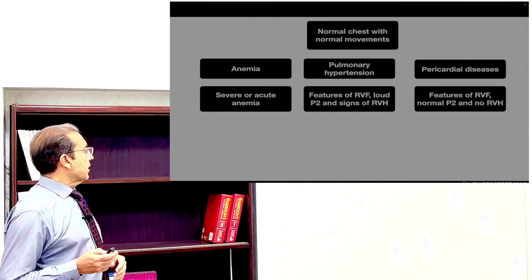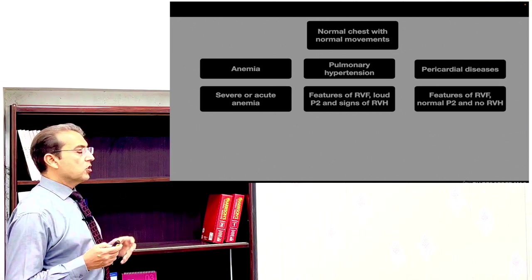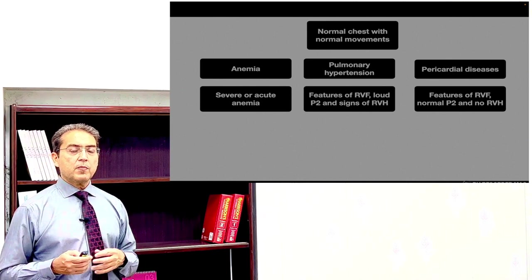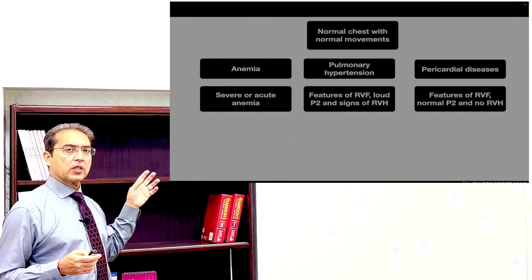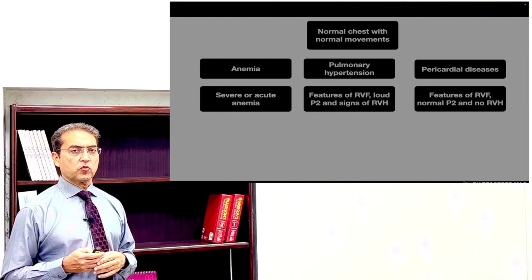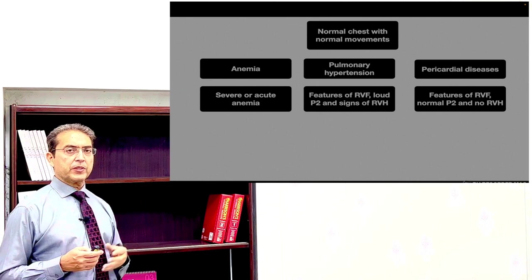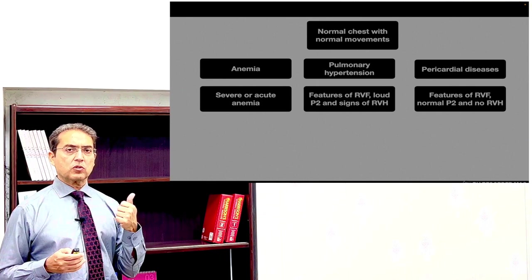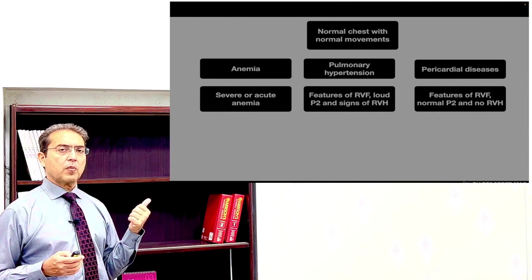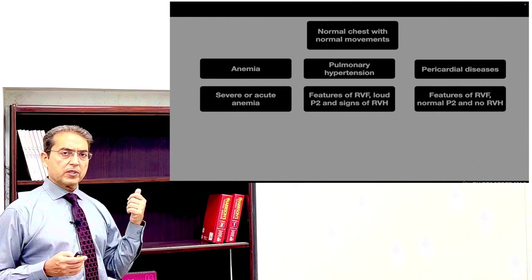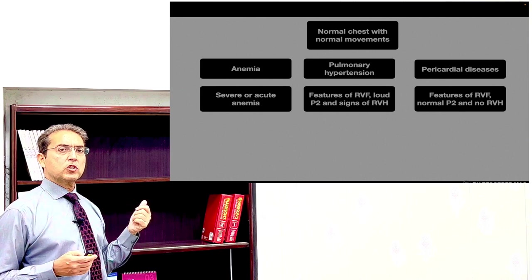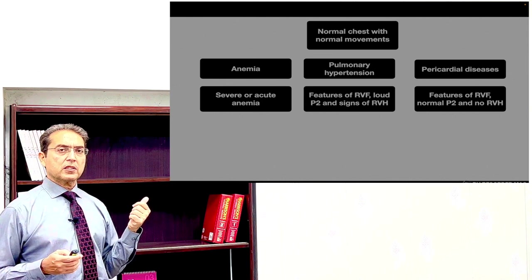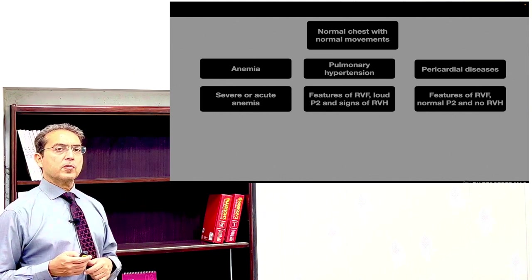In pericardial diseases, the patient may have features of right ventricular failure: raised JVP, congested liver, and pulsus paradoxus. But the patient does not have a loud P2 or features of right ventricular hypertrophy. This is what differentiates it from pulmonary hypertension — in pulmonary hypertension P2 is loud, while in pericardial disease P2 is normal. A pericardial knock may be present, but there are no features of right heart enlargement or hypertrophy in pericardial disease.